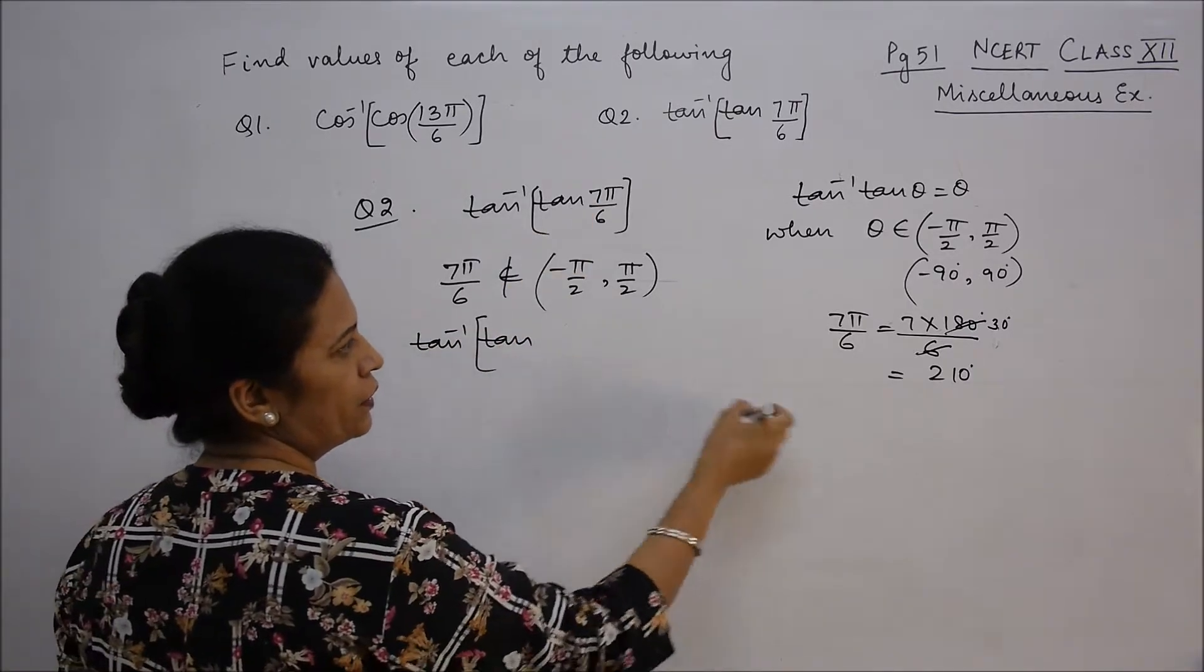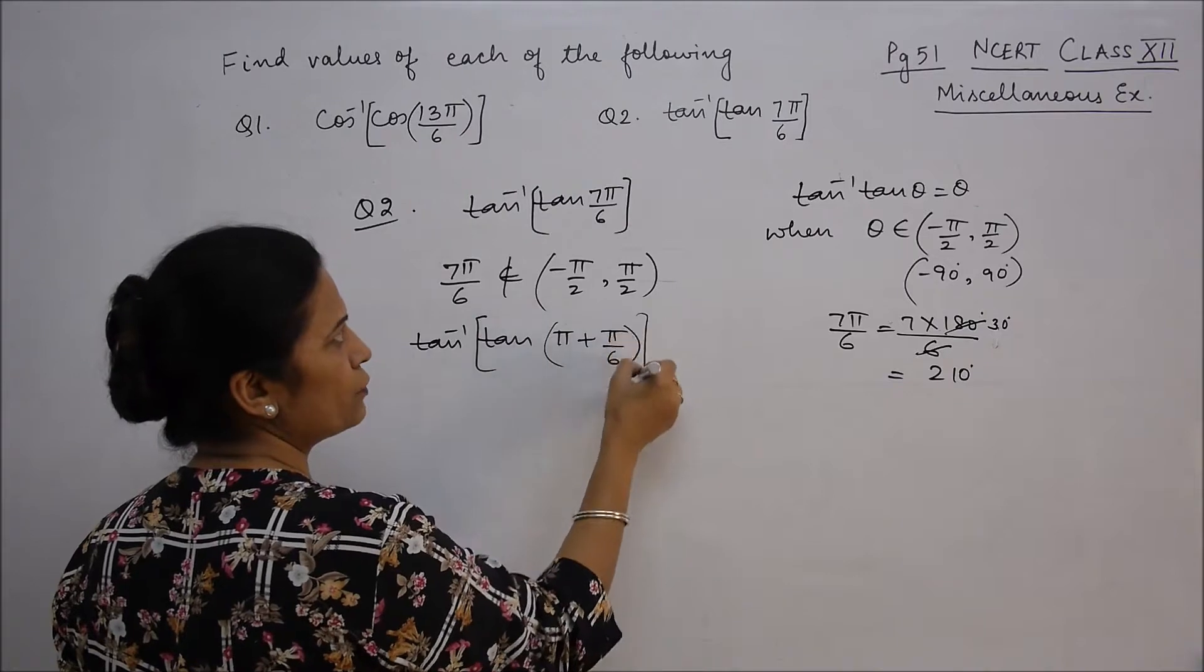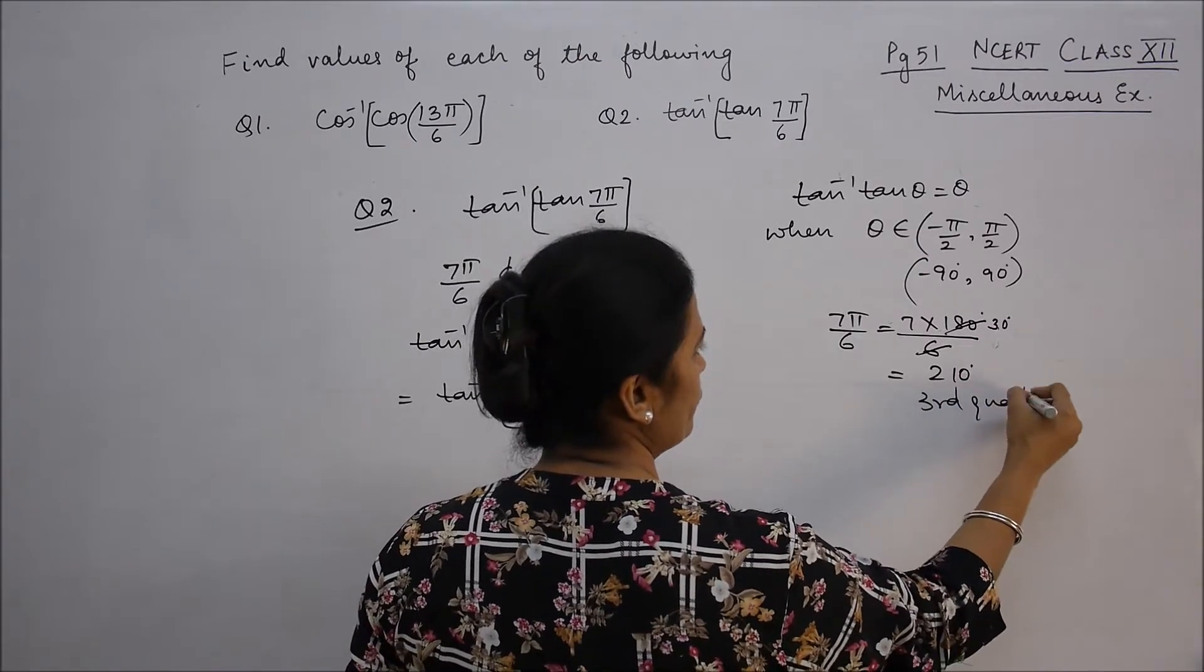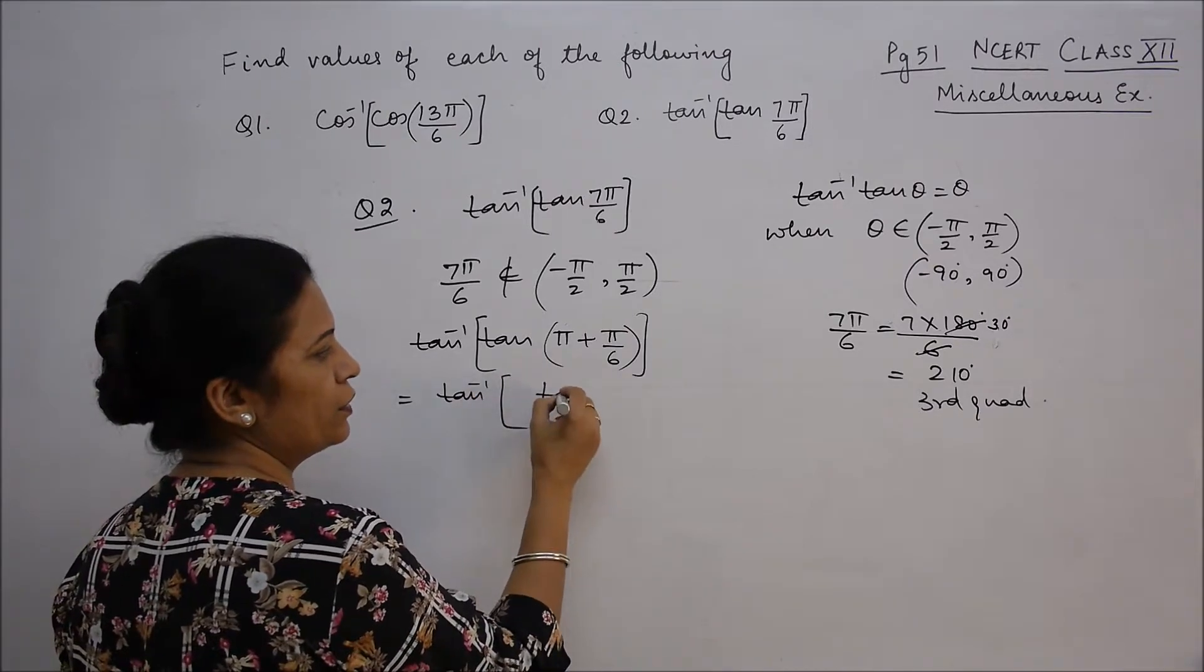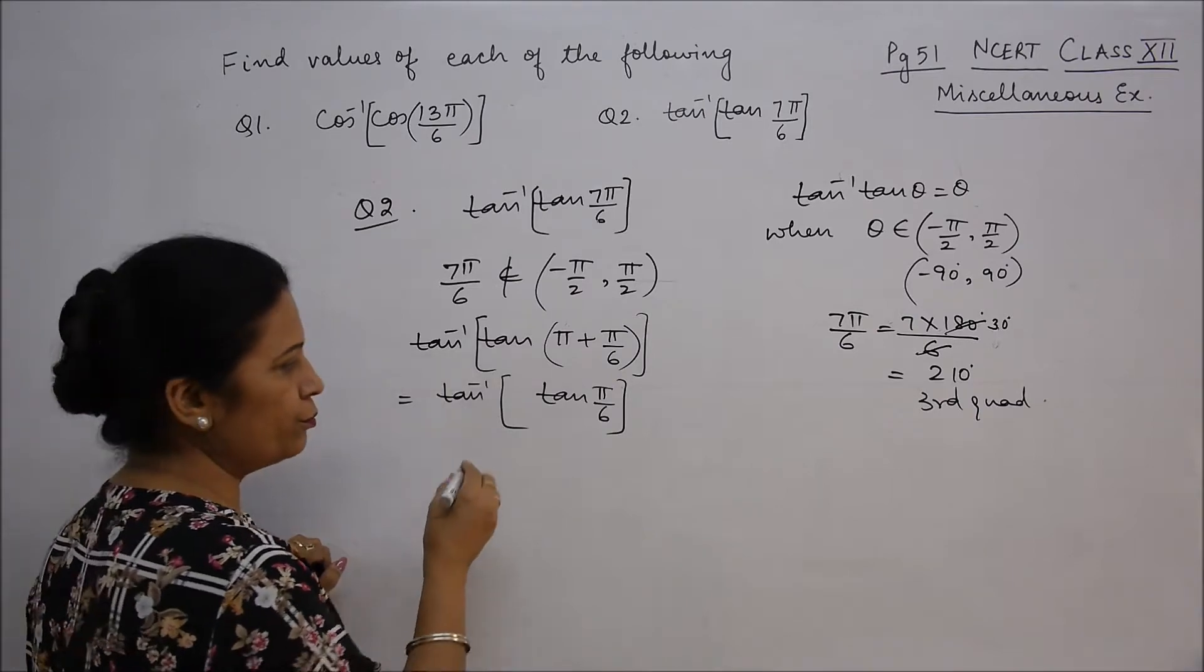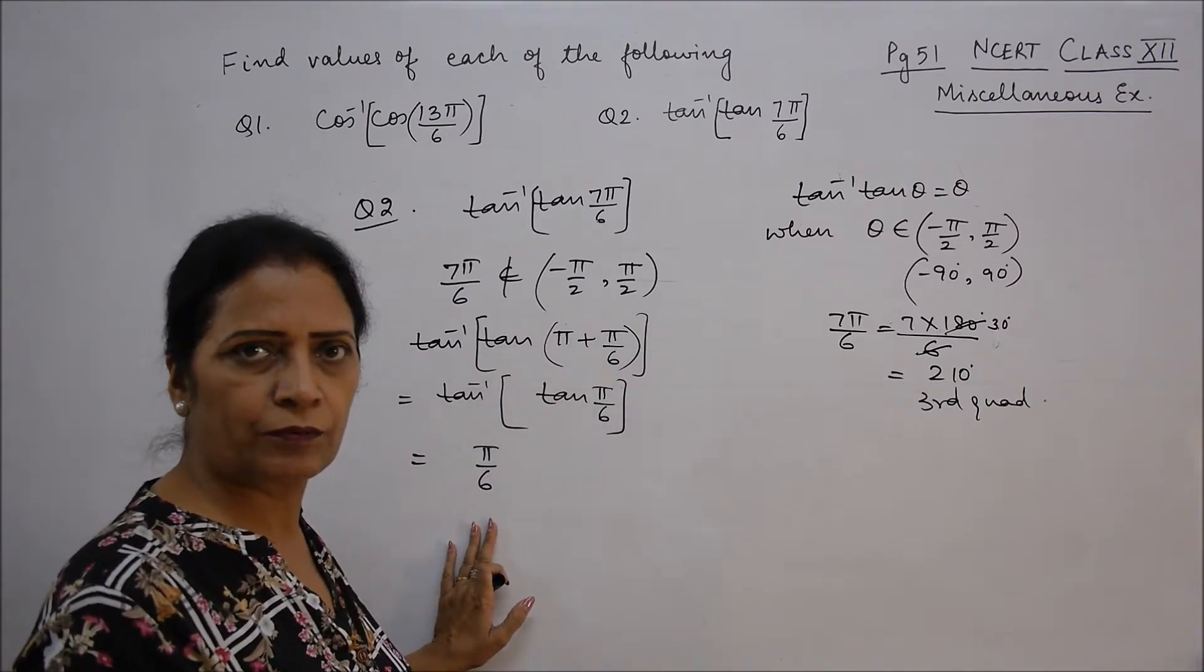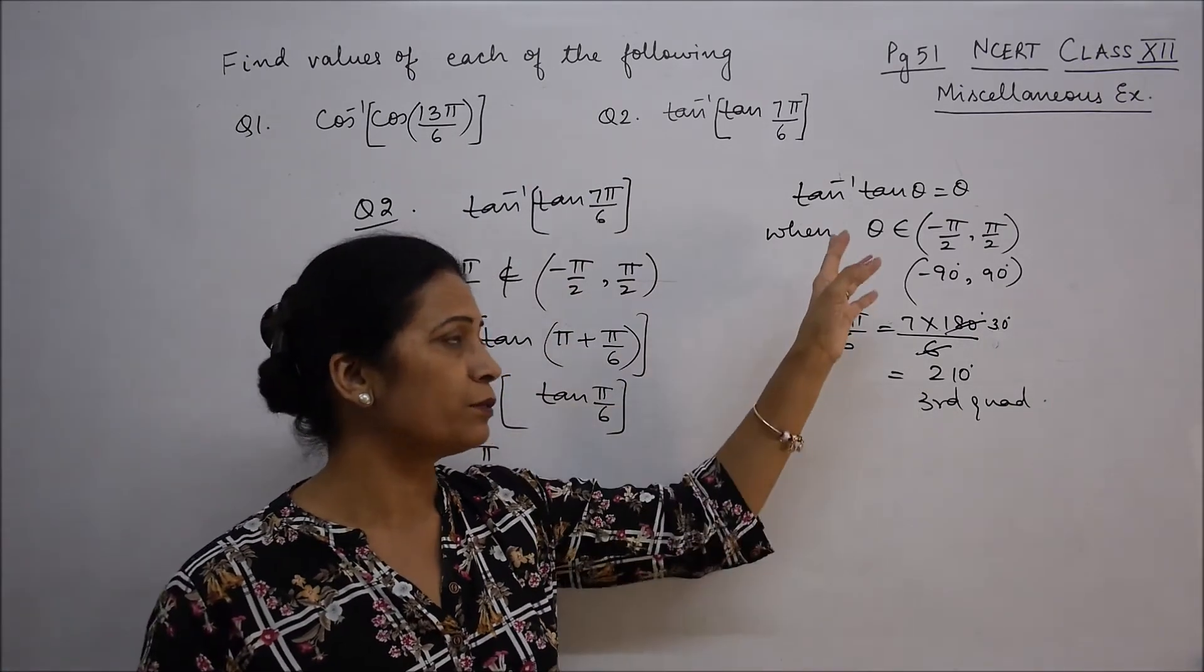Then we write 7π/6, so how much is it? This is in the third quadrant. In the third quadrant we write π plus π/6. This is the third quadrant. Third quadrant, tan is positive. So it is tan π/6. That means now we can write directly this as π/6. So tan inverse related questions to this principal branch, to simplify.